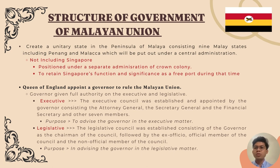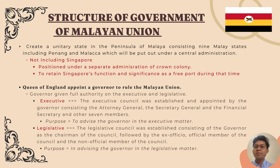Singapore was positioned under a separate crown colony due to its significance as a free port. The Queen of England appointed a governor to rule the Malayan Union, who was given full authority over the executive and legislative branches. An executive council consisting of the Attorney General, the Secretary General, the Financial Secretary and seven other members was established to advise the government on executive matters. A legislative council was also established, consisting of the governor as chairman, official members and non-official members, working to advise the government on legislative matters.